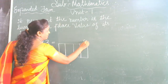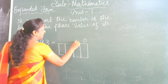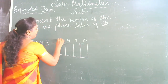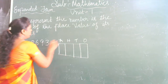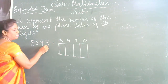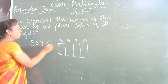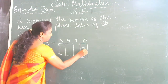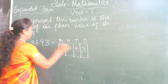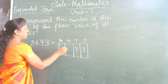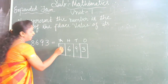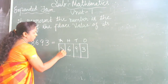Right here: 1s place, 10s place, 100s place, 1000s place. So 3 is in the 1s place, 9 is in the 10s place, 6 is in the 100s place, and 8 is in the 1000s place.